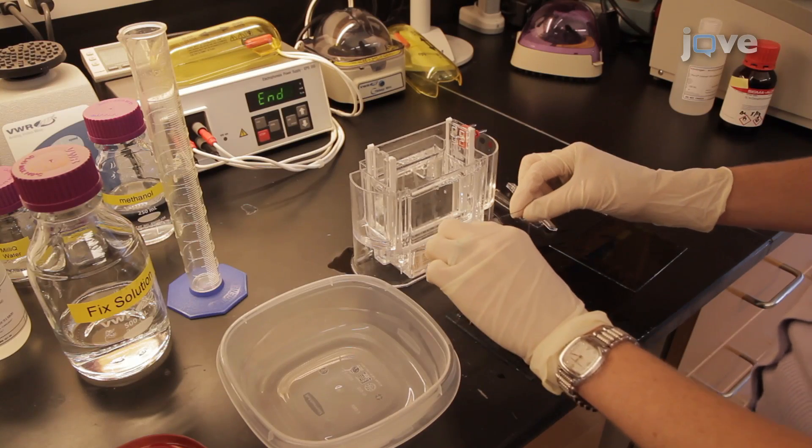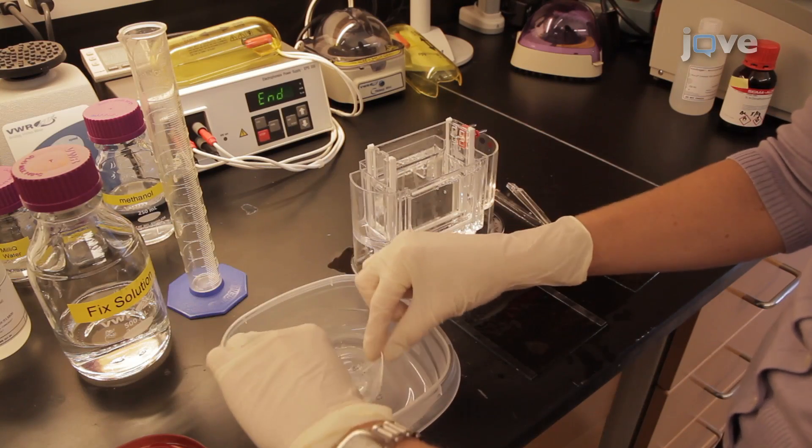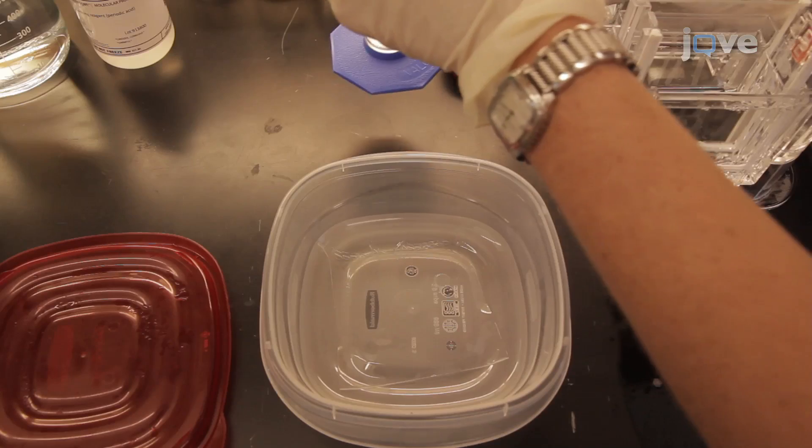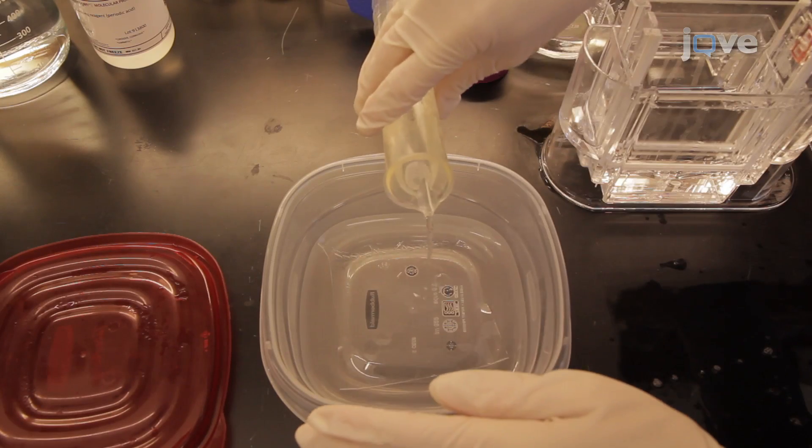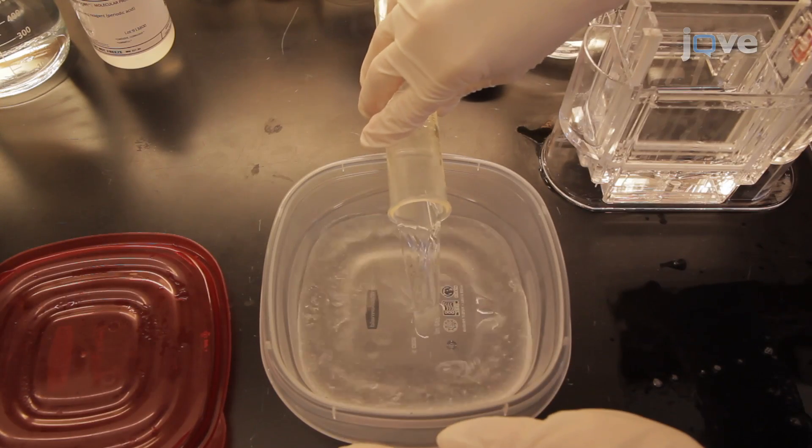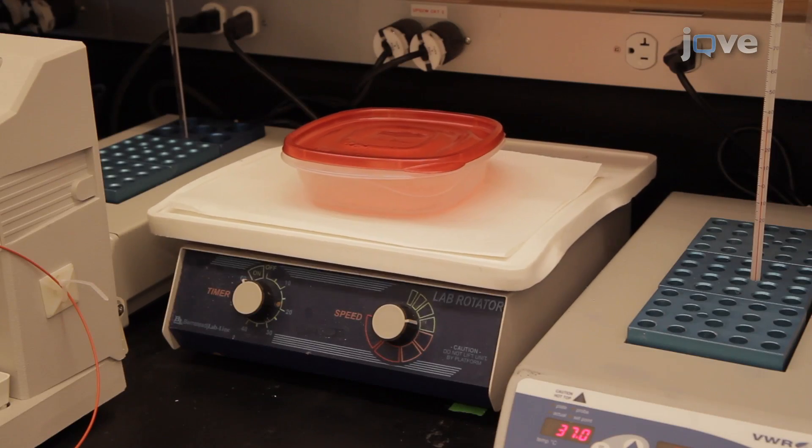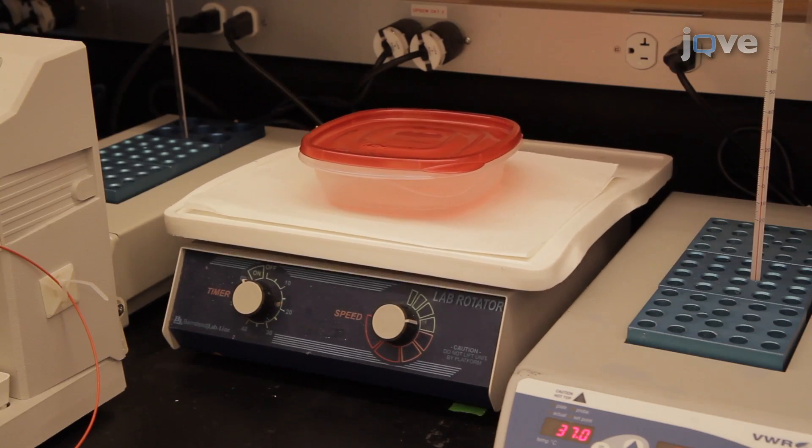When the electrophoresis is complete, remove the gel from the cast and place it in a plastic box. Fix the gel by adding 100 milliliters of the prepared fix solution. Leave the gel overnight at room temperature with gentle agitation.